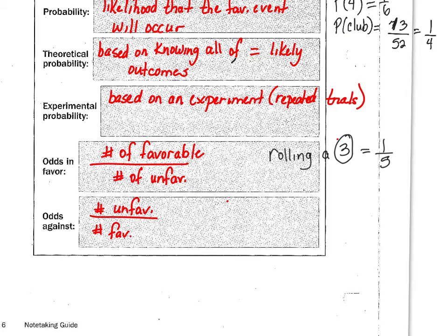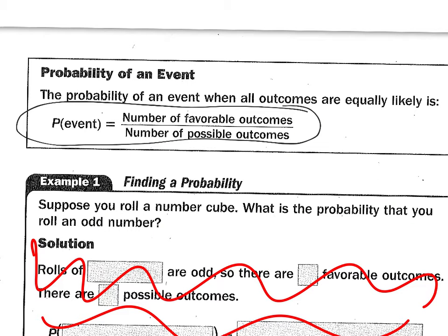The odds against something happening, you put the unfavorable over the favorable. So what are the odds against rolling a three? Well, there's one three, right? I always put the favorable on the bottom. So there would be one, and then five are unfavorable. So it would be five to one.